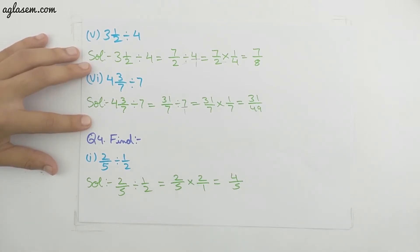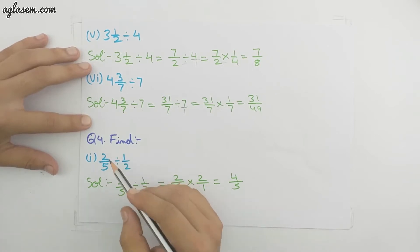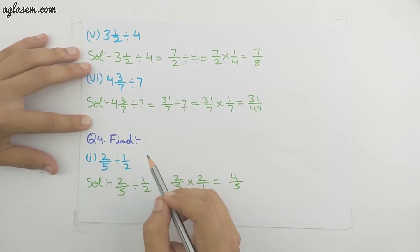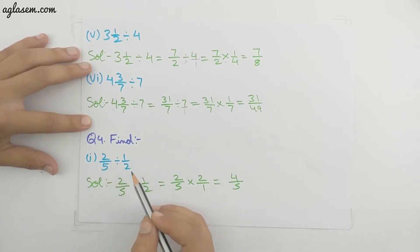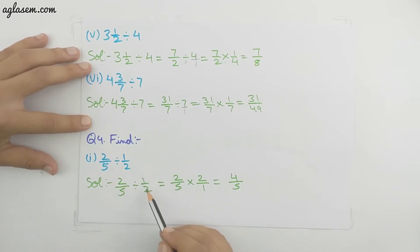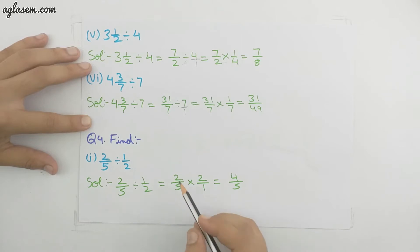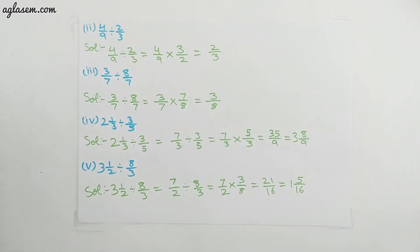Moving to the fourth question — we have to divide two fractions with each other. First part: 2/5 divided by 1/2. We reciprocal the second fraction, so 2/5 multiplied by 2/1 gives 4/5, which is a proper fraction.